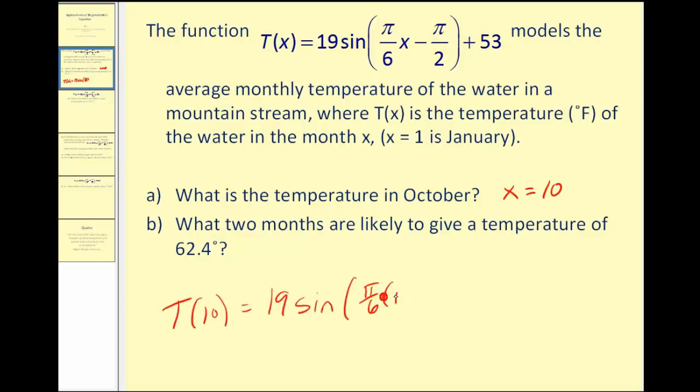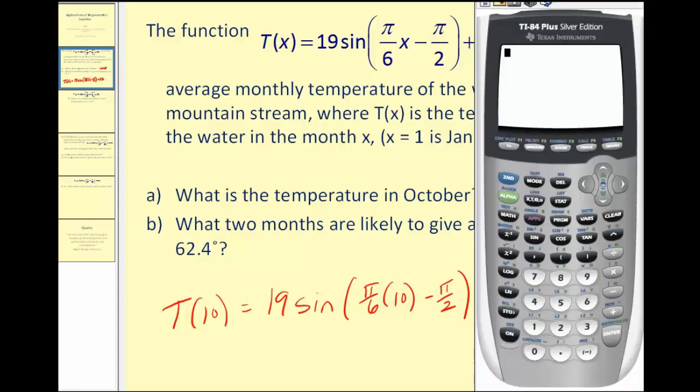So pi over six times ten minus pi over two, and then we'll add fifty-three to that. Let's get our calculator out. We'll make sure we're in radian mode, and the reason I know that is pi over six and pi over two. So we're just going to type this in and see what the temperature would be.